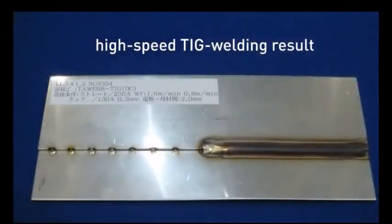As you can see, Towers TIG is a TIG welding robot that can achieve both a beautiful looking bead and high-speed welding.